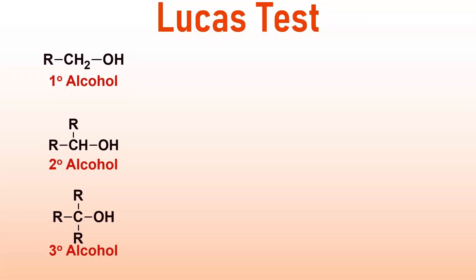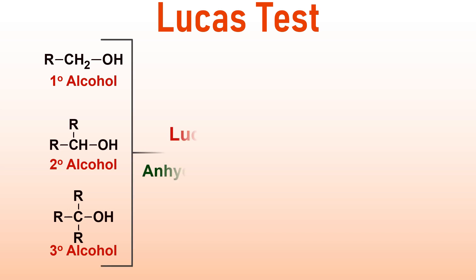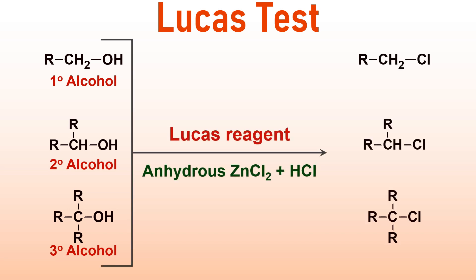Without wasting time, let us dive into the details of the LUCAS test. It involves using LUCAS reagent, a mixture of anhydrous zinc chloride and HCl, to differentiate primary, secondary and tertiary alcohol types. When this reagent is added, the alcohols transform into corresponding alkyl chlorides. We distinguish between these alcohols by observing the different rates of alkyl chloride formation.